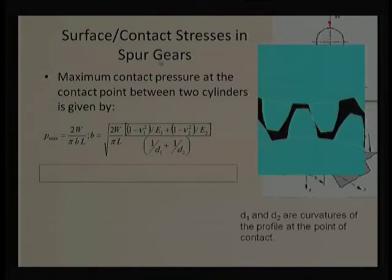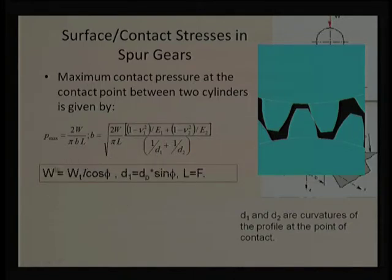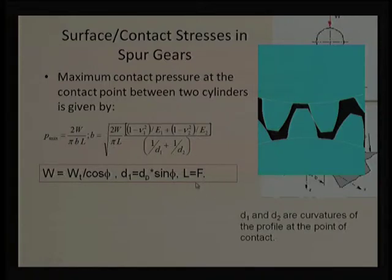In gear terminology, instead of using L for length, we use F for face width. The contact diameters D1 and D2 are the curvatures of the involute profile at the contact point, which can be determined using the pressure angle. The normal force W can be given in terms of the tangential force W_t, the face width F, and the pressure angle φ.